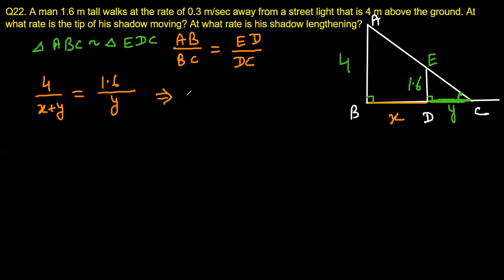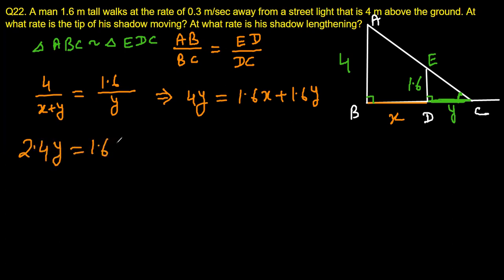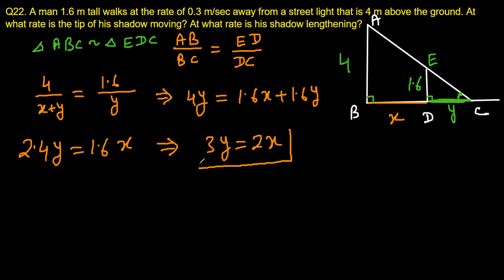Cross multiplying gives 4y equals 1.6(x + y), which simplifies to 4y = 1.6x + 1.6y. Taking 1.6y to the left: 2.4y = 1.6x. Multiplying through and simplifying by dividing by 8 gives us 3y = 2x.